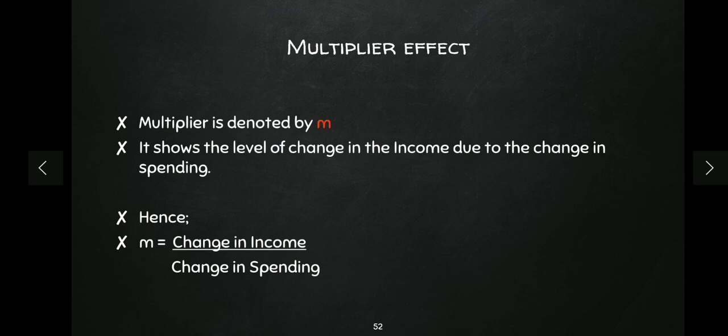To find out the value of any multiplier, the standard formula is: change in national income divided by change in that spending. For example, if I want to find the investment multiplier, I will use the formula: change in national income divided by change in investment expenditure.